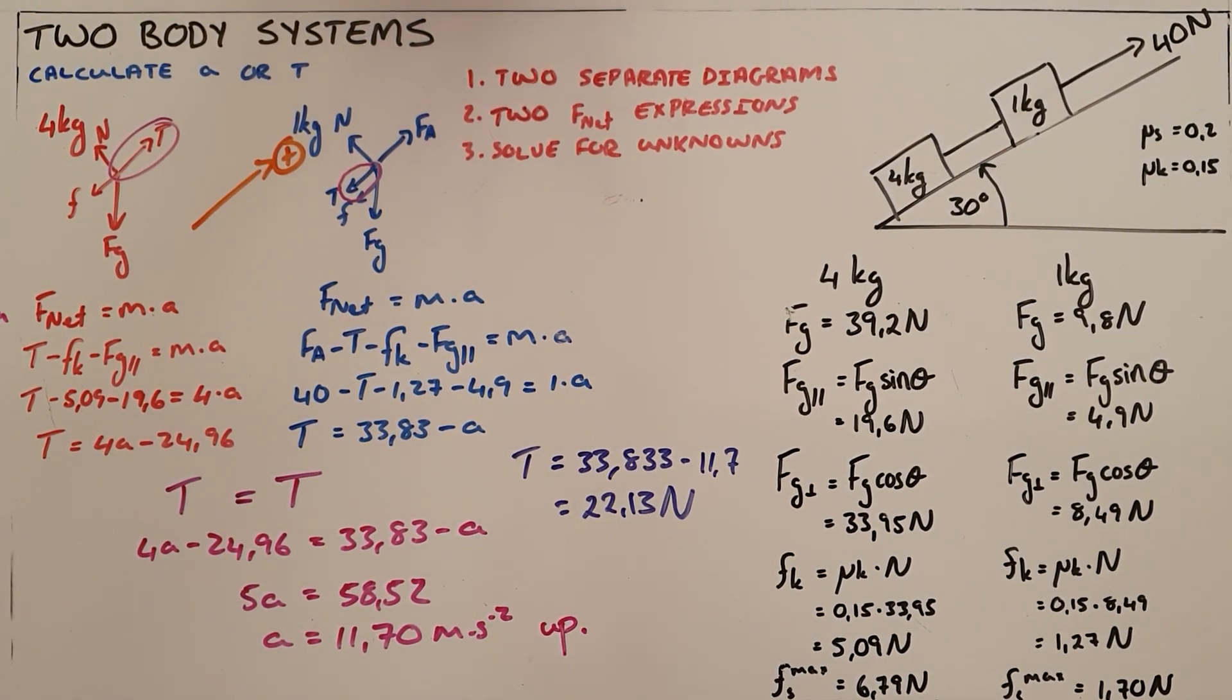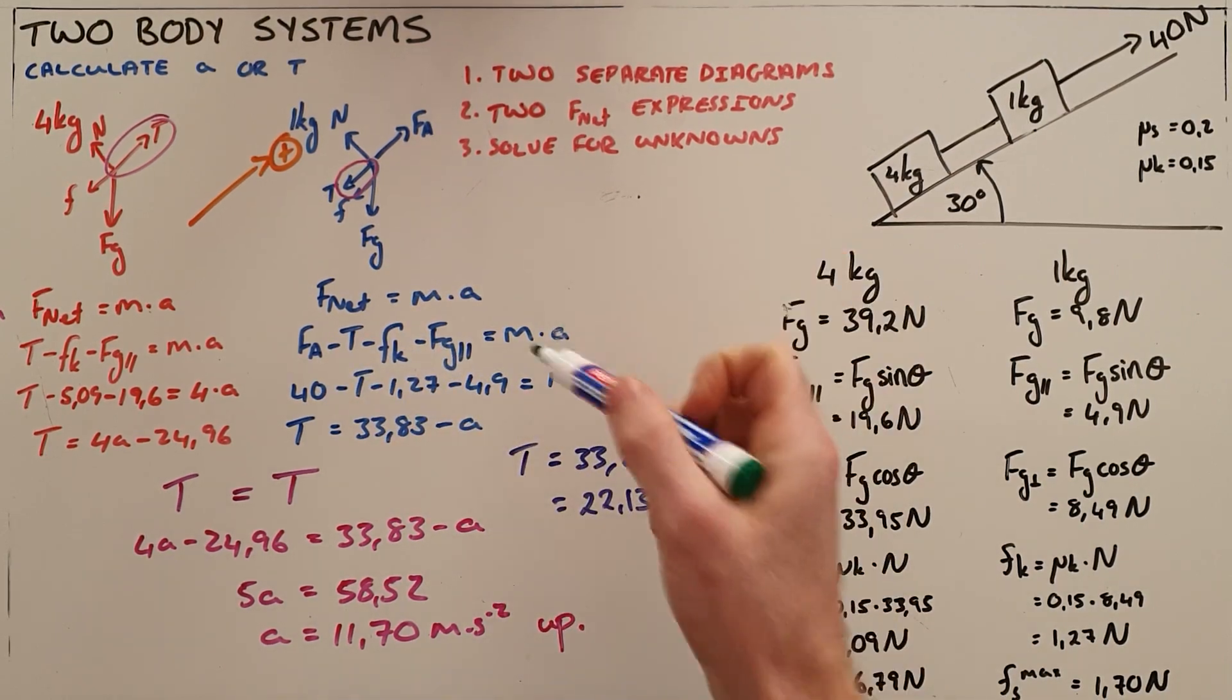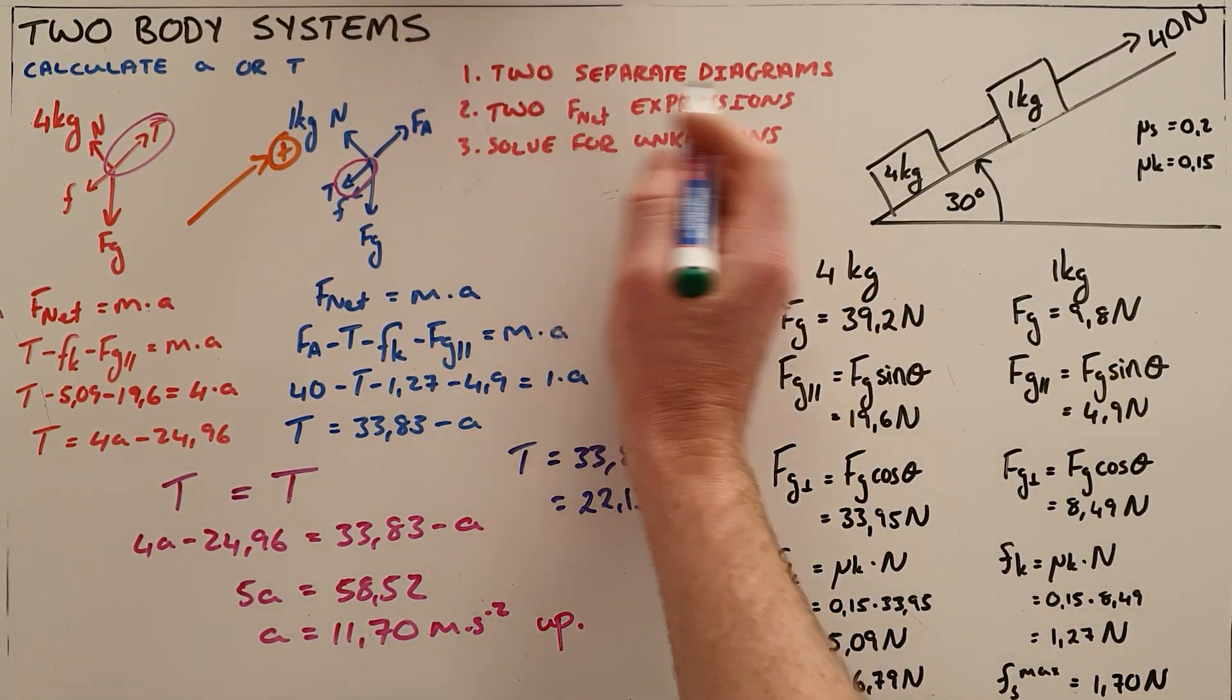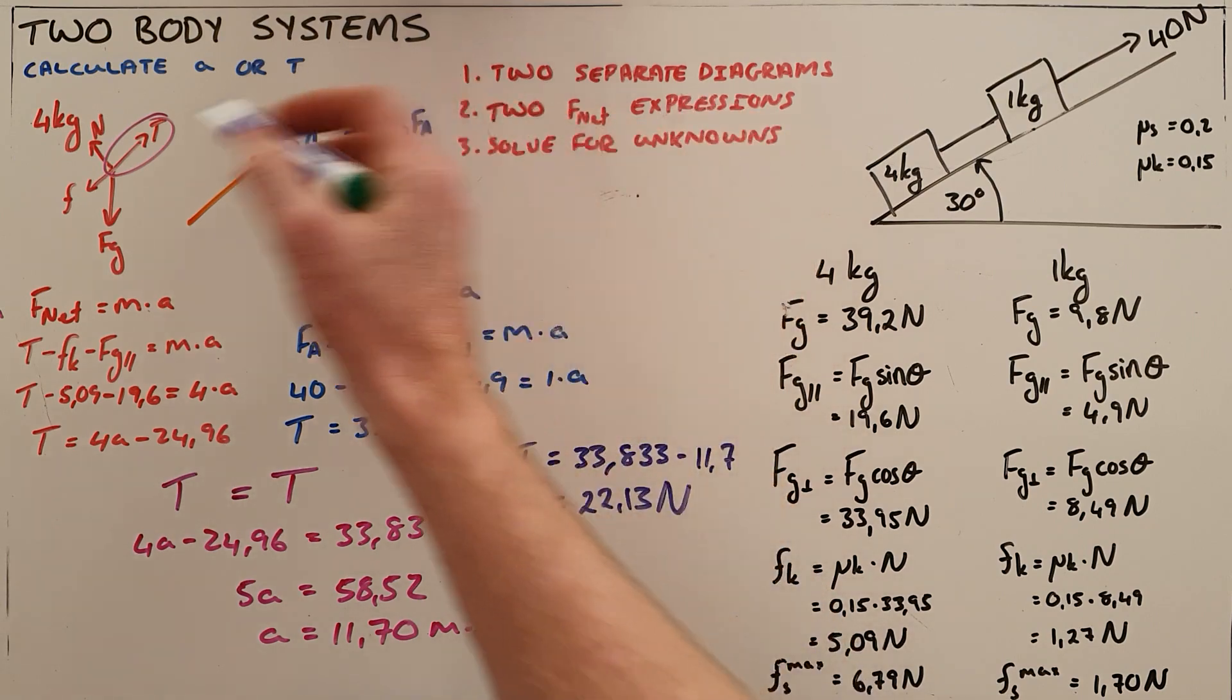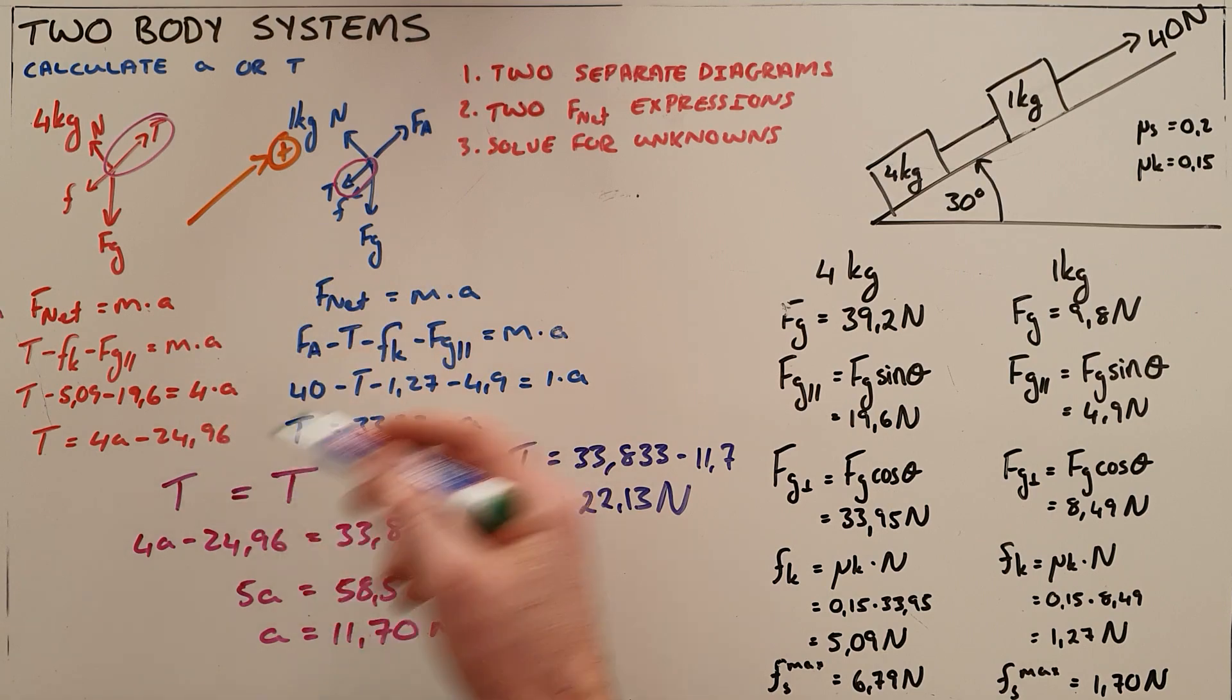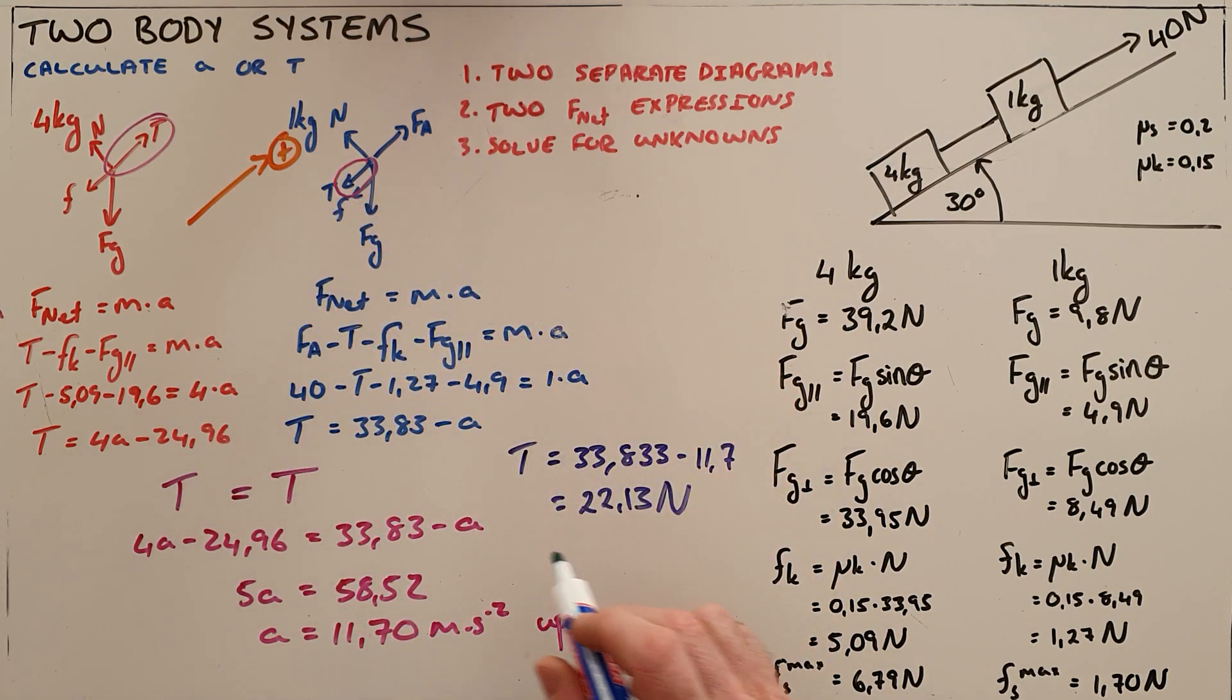So very important to realize here that a two-body system is essentially treated as two separate bodies where you draw two separate free body diagrams, you write two separate Newton's second law expressions, and then you solve for the unknown by knowing that the tension and acceleration is constant.